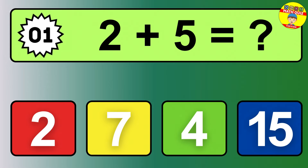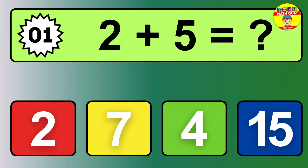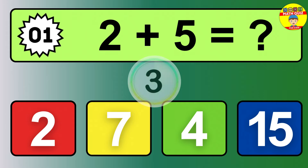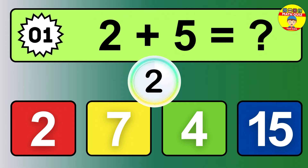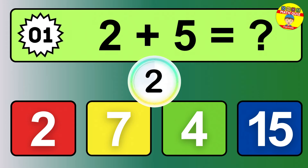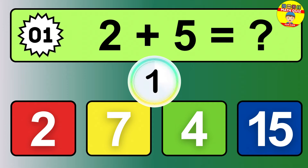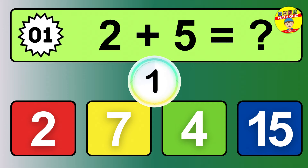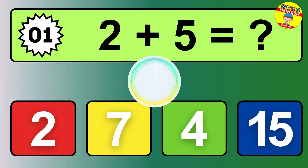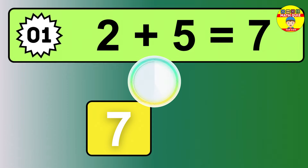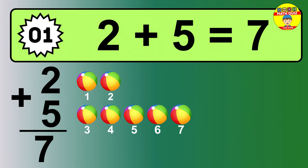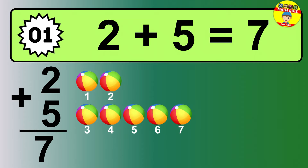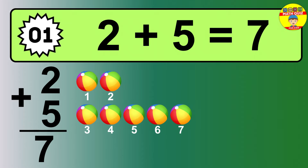Question one: two plus five equals what? The answer is two plus five is seven.